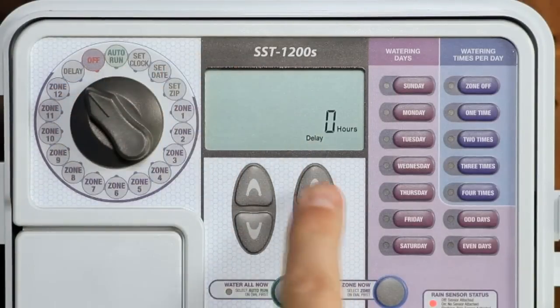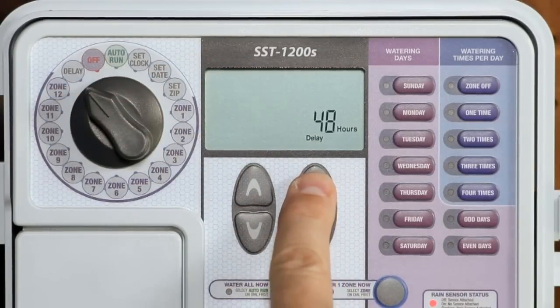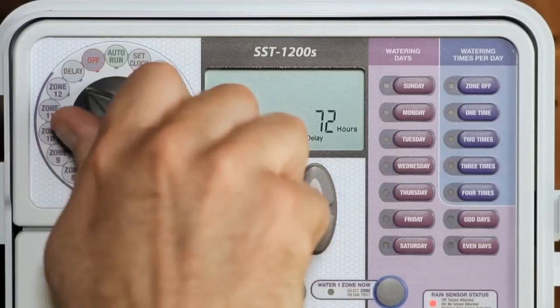You also can delay watering for up to 72 hours. This can be especially handy if you'll be doing things in your yard. Just turn the dial to delay. Use the right up down arrows to set the amount of time delay. Then turn the dial back to auto run.